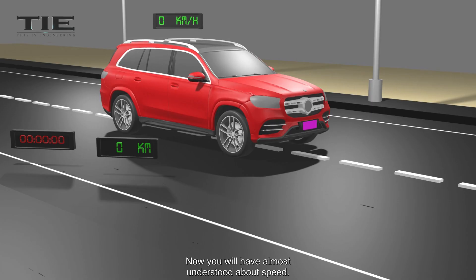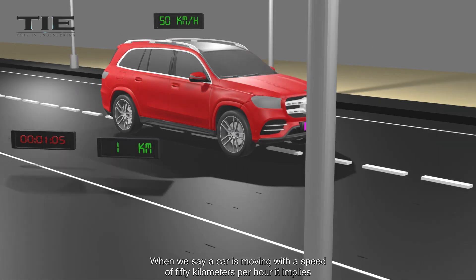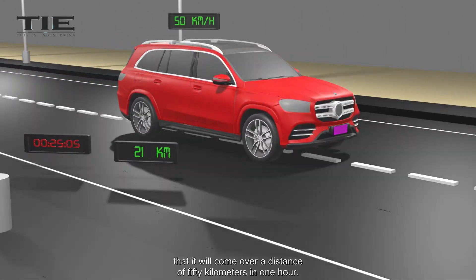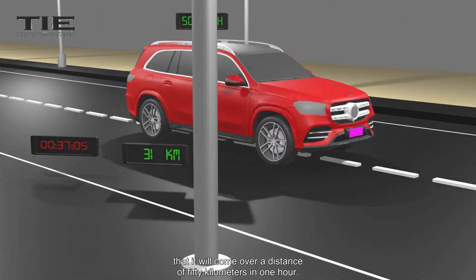Now you will have almost understood about speed. Before calculating the method of speed, we want to know some more thing. When we say a car is moving with a speed of 50 kilometers per hour, it implies that it will cover a distance of 50 kilometers in 1 hour.